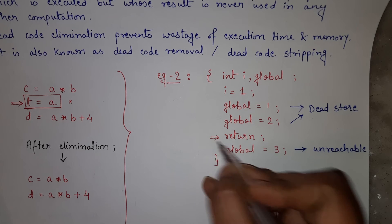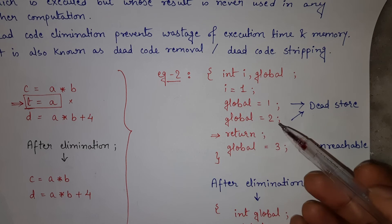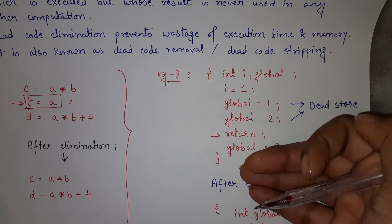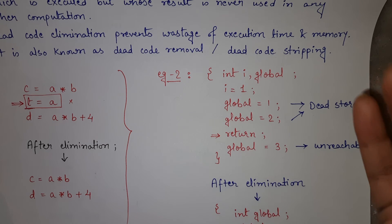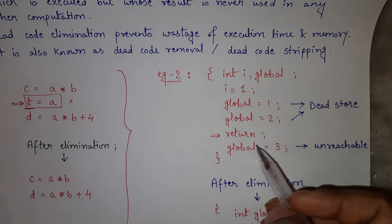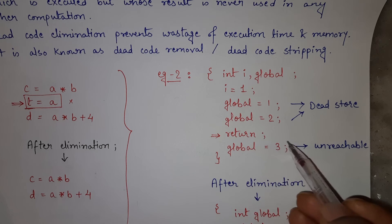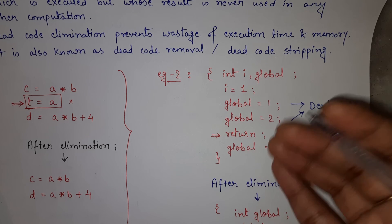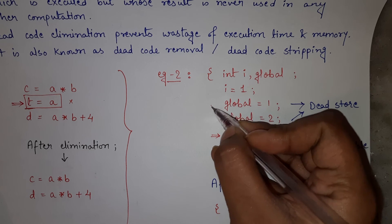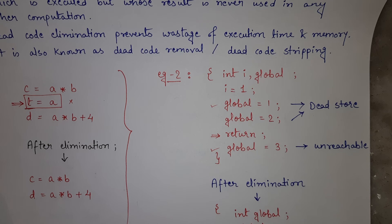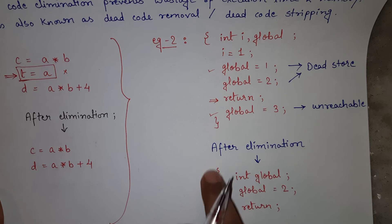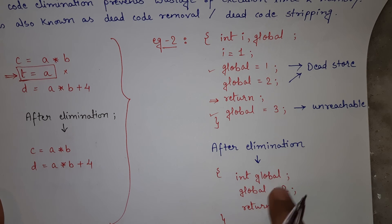Similarly, after return in any function, the execution returns from there, and whatever is written after return won't be executed at all. So the line global = 3 written after return is unreachable code — the execution will never come there. At the time of dead code elimination, global = 1 is our dead code and global = 3 is also our dead code. Also, integer i is of no use. So we can simply remove all of them, and after elimination, this whole code can be written in an optimized way in just three lines.